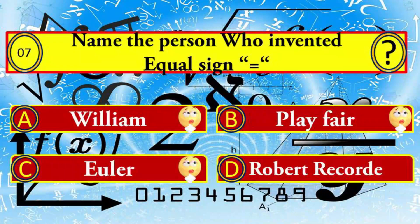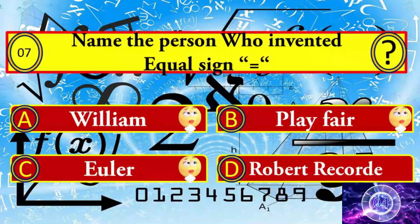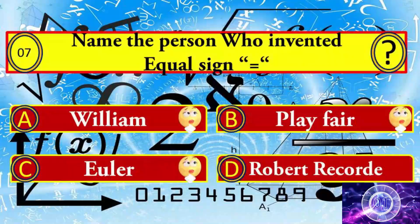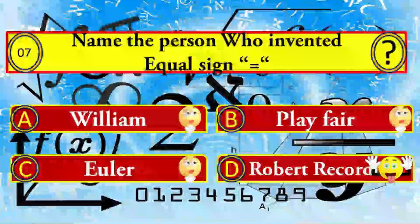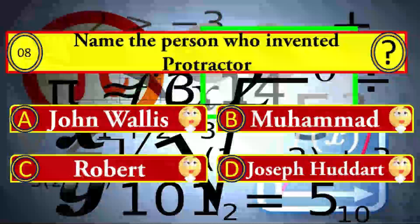Question number seven: name the person who invented the equal sign. Your options: A) William, B) Playfair, C) Euler, and D) Roberts Record. Roberts Record is the right answer.